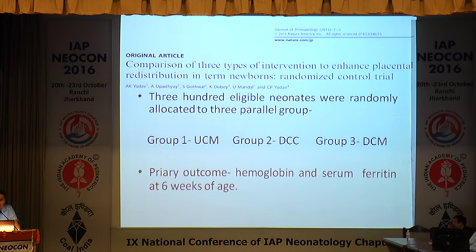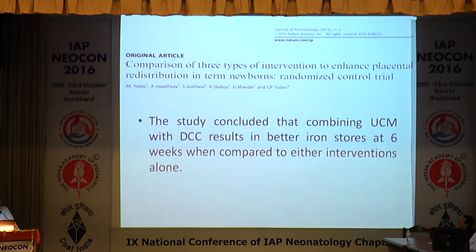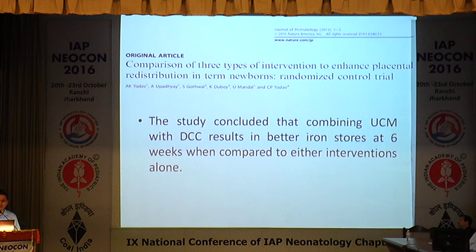There are not many trials proving the efficacy of umbilical cord milking, but some are coming, especially from India. One such trial published in the Journal of Perinatology last year had three groups: umbilical cord milking, delayed cord clamping, and a combined milking plus delayed cord clamping group, with primary outcome being hemoglobin and ferritin at six weeks — done on term babies. The study showed that combining milking with delayed cord clamping resulted in better iron stores at six weeks compared to either intervention done alone. So there could be some benefit of combining the two interventions, but more studies showing long-term outcomes at one, two, and five years need to be done.